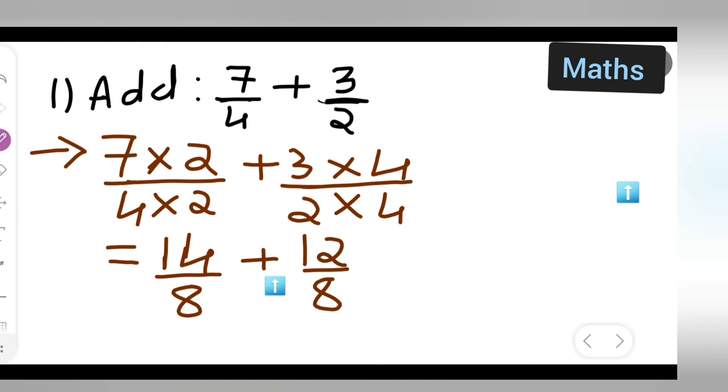Now see, 3 fours are 12, 2 fours are 8. The denominator is the same now. The denominators were different, so to make them the same, we cross multiply.